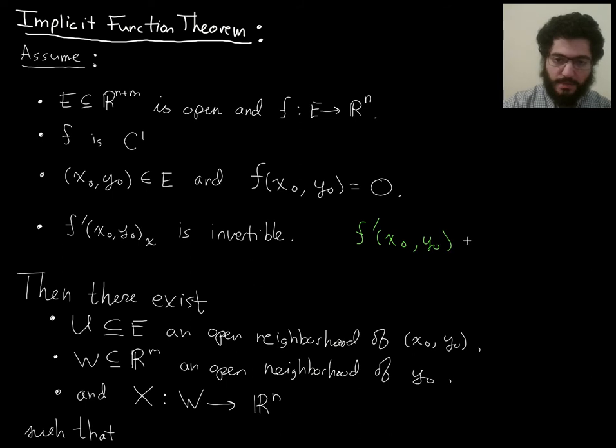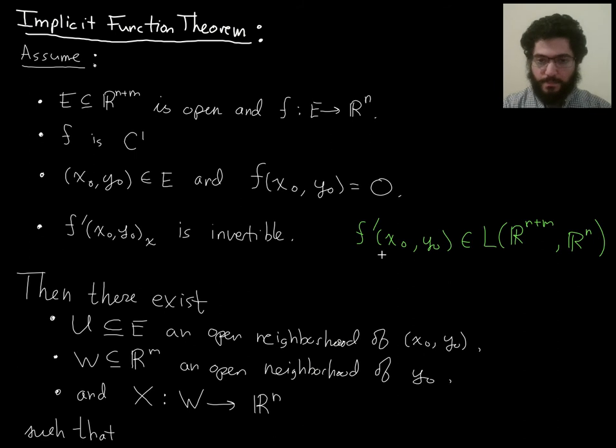So, if you look at just f'(x_0, y_0), that's going to be a linear map of this type. Right, because the input, you know, f is a function of n plus m variables, and it outputs n components. So, the derivative, if it exists, is of this type, and the derivative does exist according to this assumption.